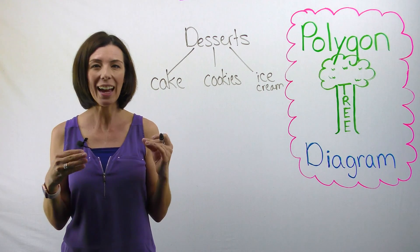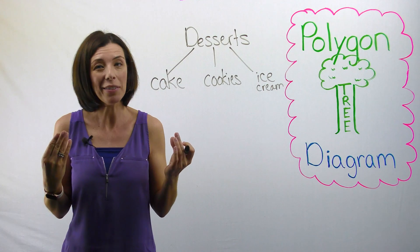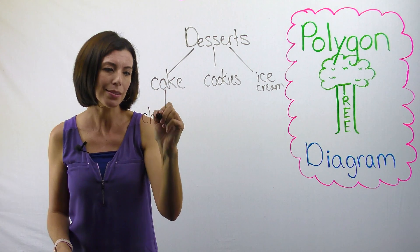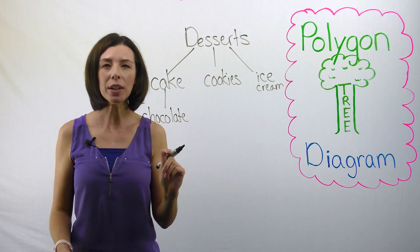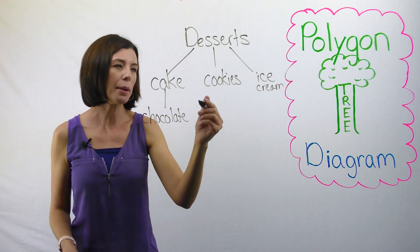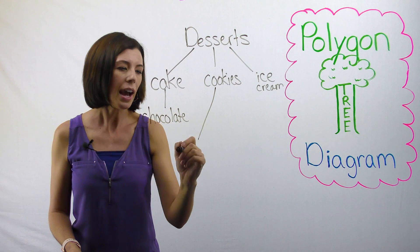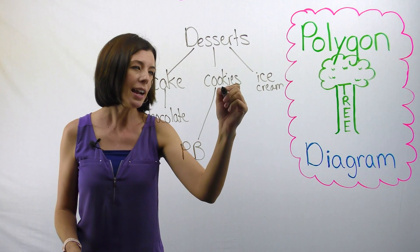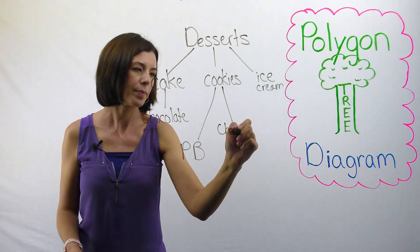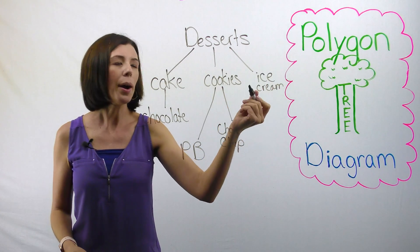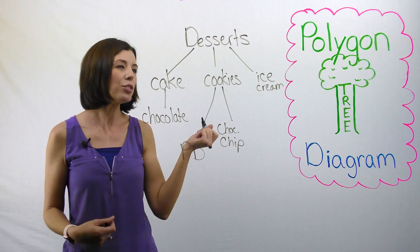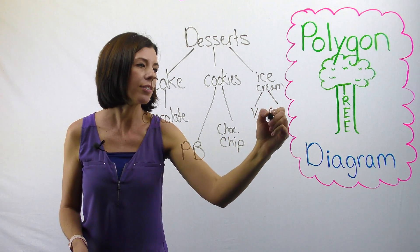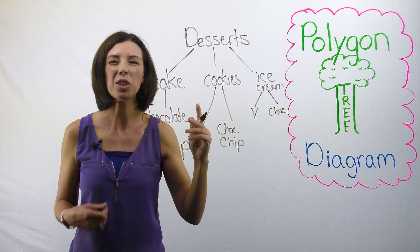So now I'm thinking about what kinds of cake I have. I only really have one kind of cake at my house, and that is chocolate cake — because it's the best. Then I'm thinking about the cookies that I have. I have two different types: peanut butter and chocolate chip. And then for ice cream, let's say I have two flavors: vanilla and chocolate.